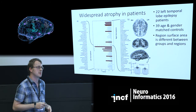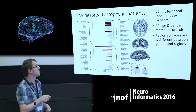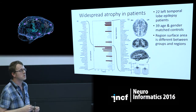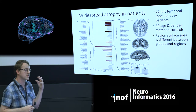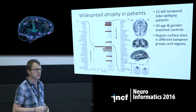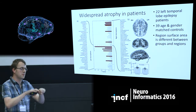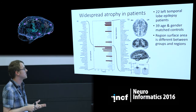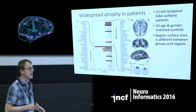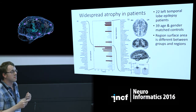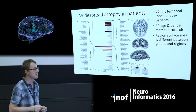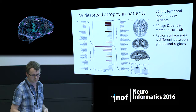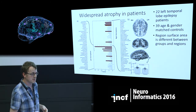We begin by looking at node size. We looked at the surface area of each of the 82 nodes using the Desikan-Killiany FreeSurfer parcellation scheme. We compared 22 patients with temporal lobe epilepsy — focal epilepsy constrained to the left temporal lobe — against 39 age and gender-matched controls. Plotting the T-statistics for each region, we see widespread atrophy across pretty much the whole brain, because patients have smaller brains in terms of total surface area. This has been reported since the late 1980s, but it's important to highlight that there are differences in nodal properties in patients that may be driving connectivity changes seen in previous studies.